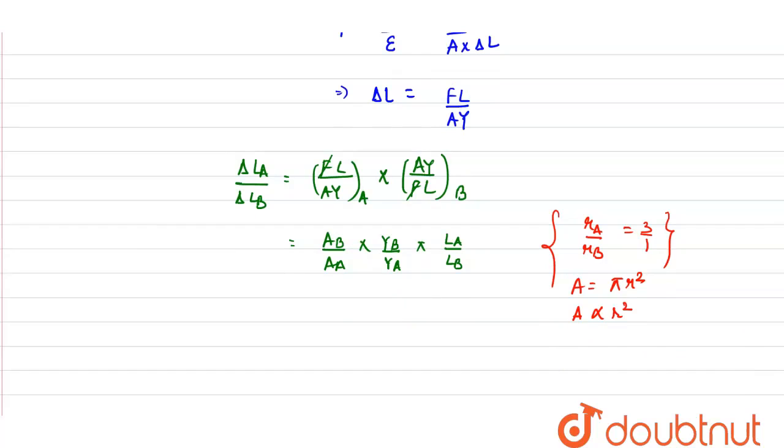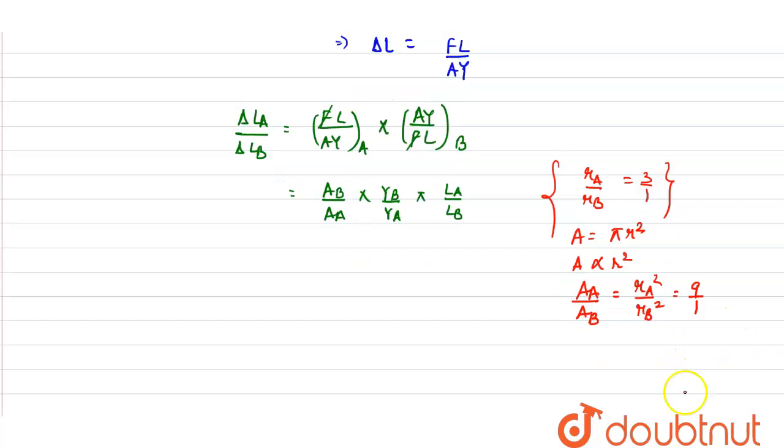Using this relation we can say area of A upon area of B will be equals to RA square upon RB square, that will be equals to 9 upon 1.